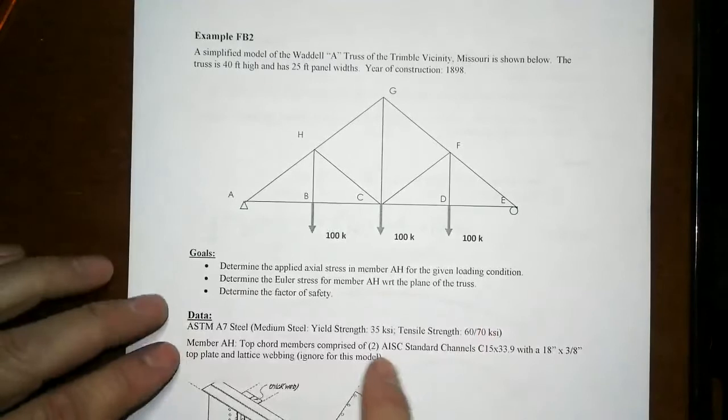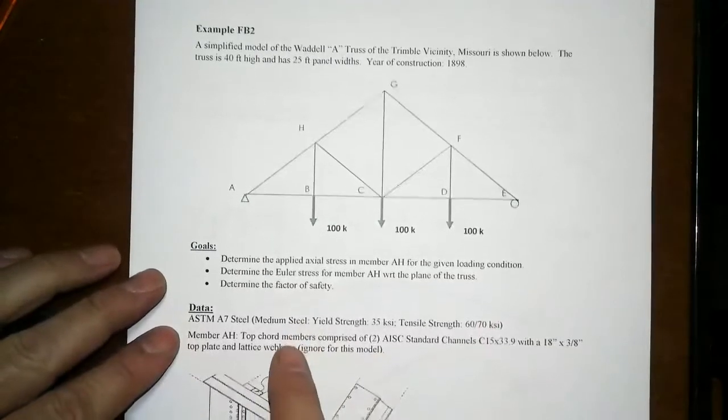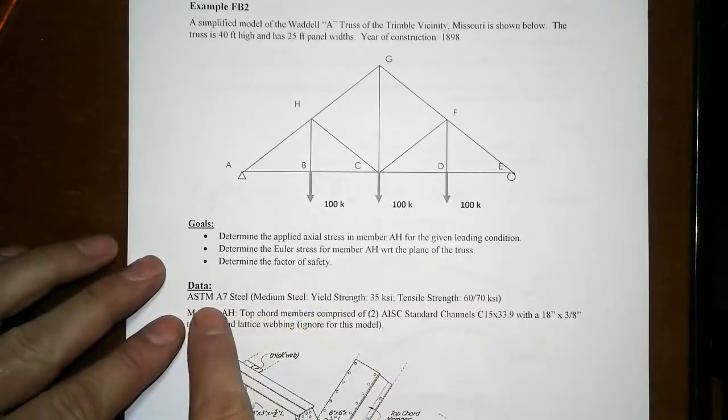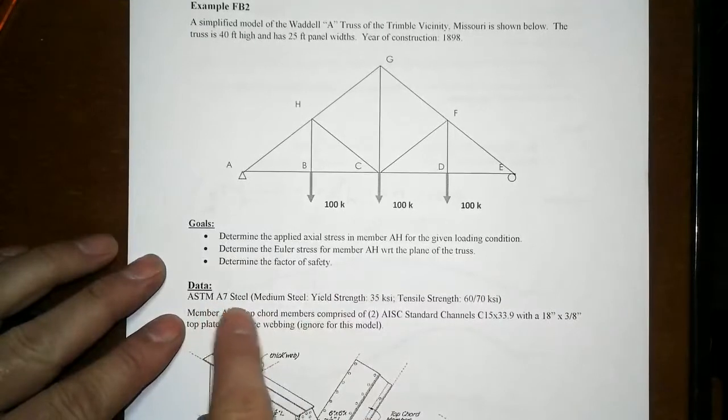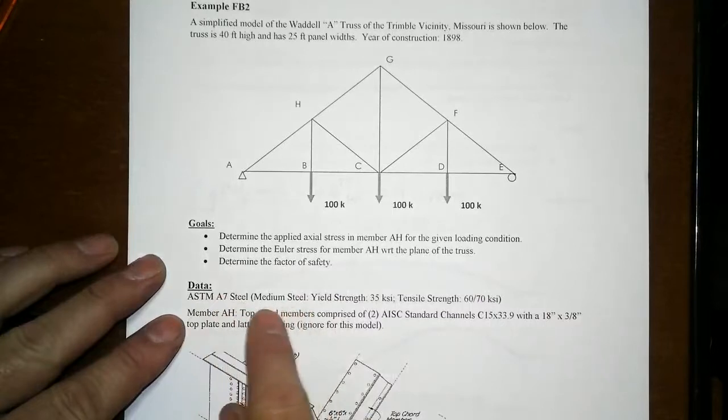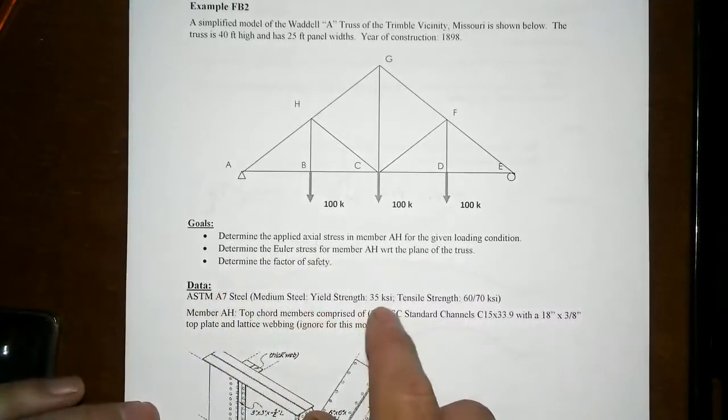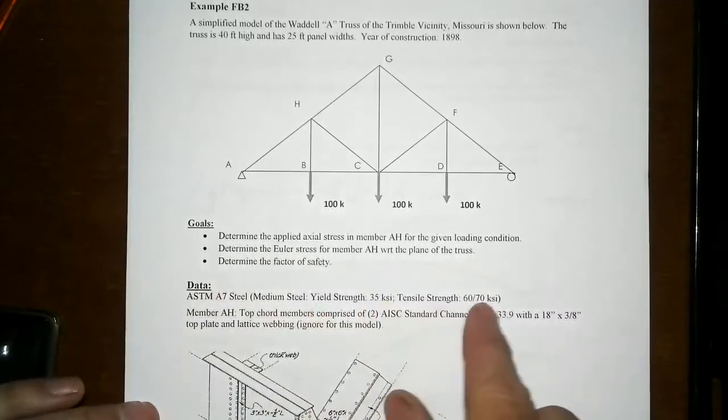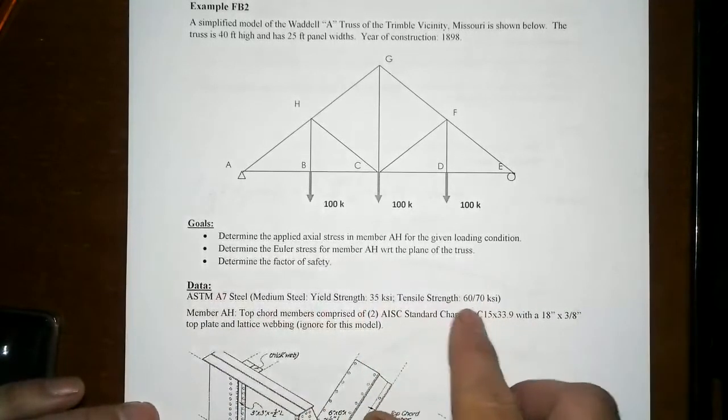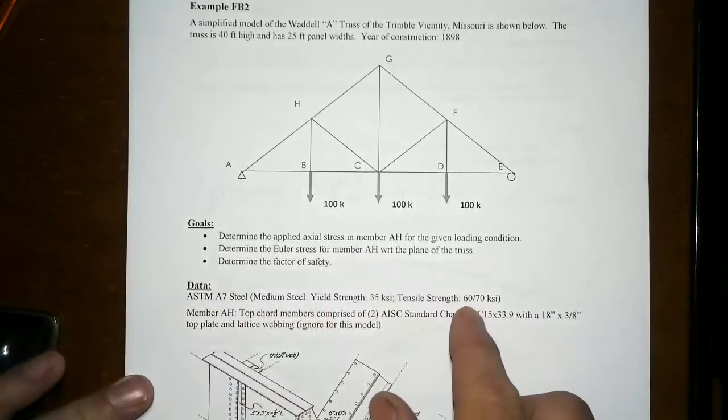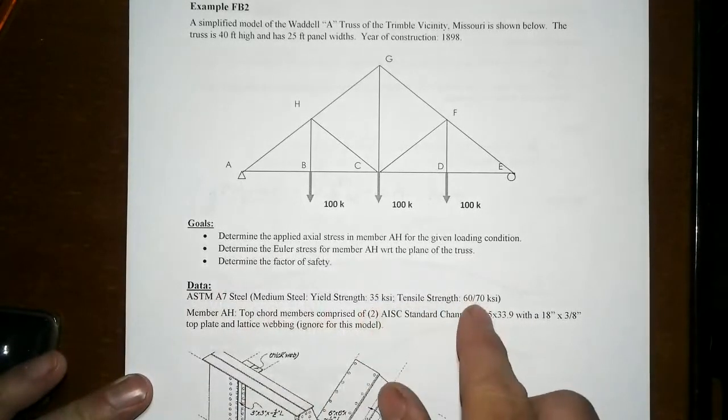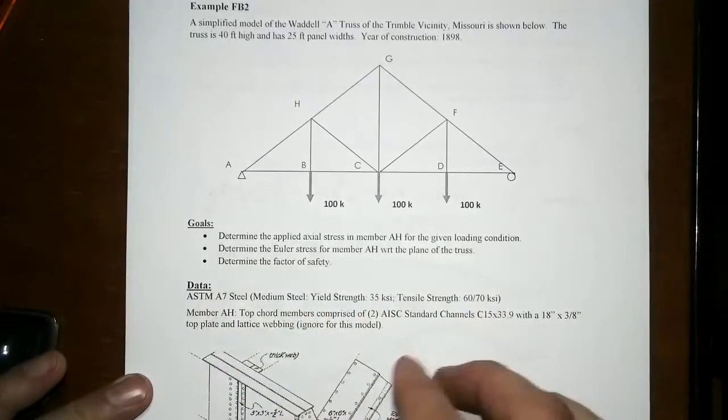When this steel structure was created, the steel they used at that time was classified something close to A7 steel, a large grouping of steel. It's a medium steel with a yield tensile strength of about 35 KSI and ultimate strength in the 60 to 70 KSI range. It didn't have great control in the properties back then—better on the yield but not so great on the tensile, hence the range.